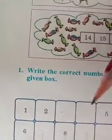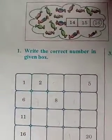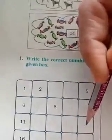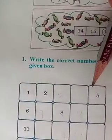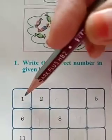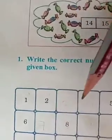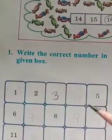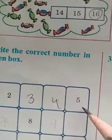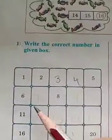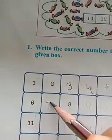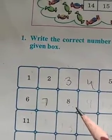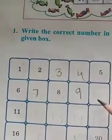Next one. Write the correct number in the given box. You are given numbers, and in the middle, dashes are there — fill in the correct number only. What is this number? One. Two. After two? Three. After three? Four. After four? Five — five is already given. Six. Seven. Eight is already there. After eight? Nine. After nine? Ten.